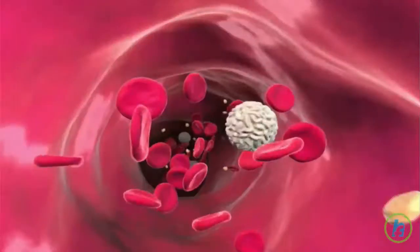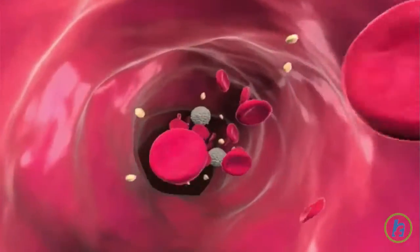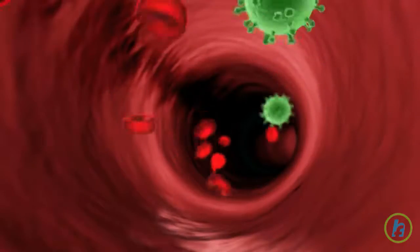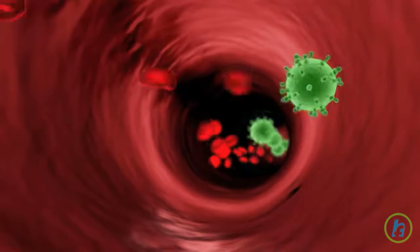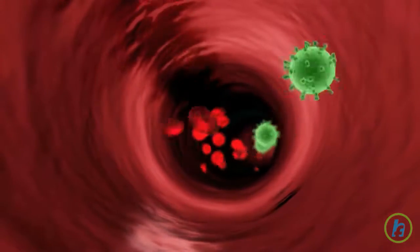White blood cells, which are produced in the bones, are a major component of the body's immune system. When an infectious organism, such as a virus or bacteria, enters the body, the white blood cells are the first line of defense for destroying the invading organism.